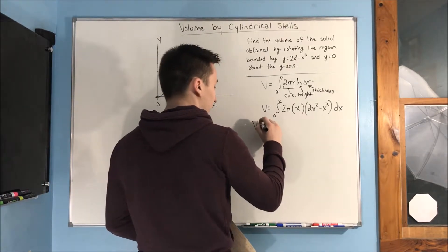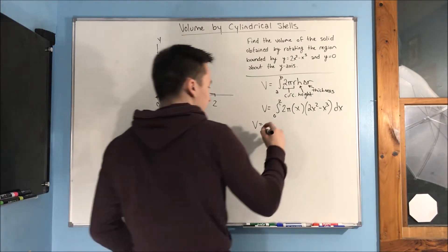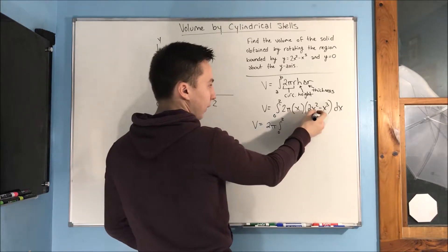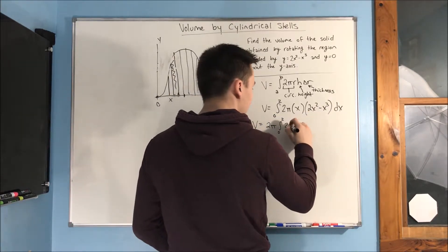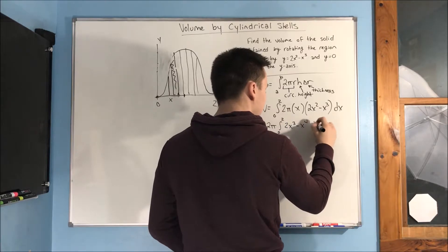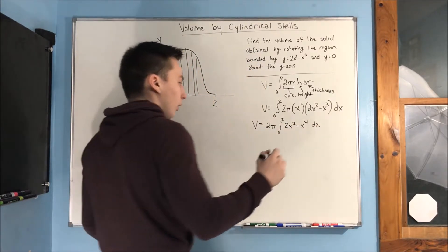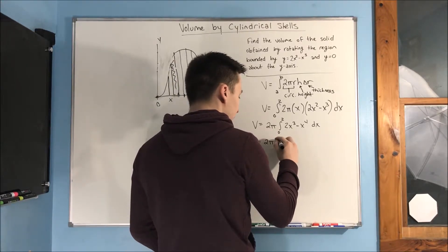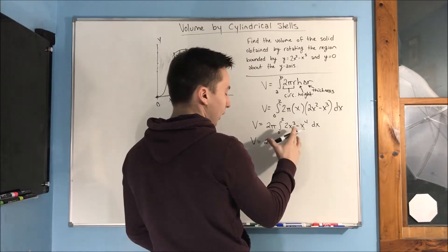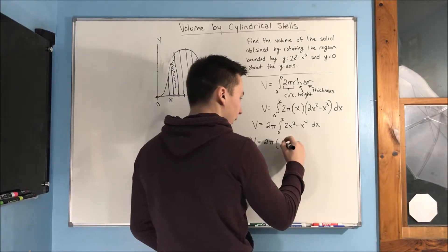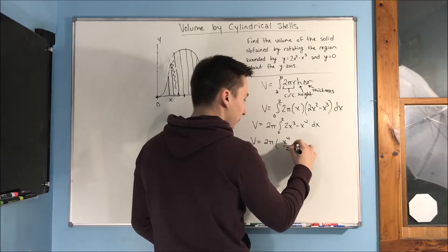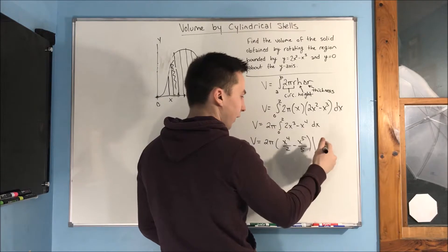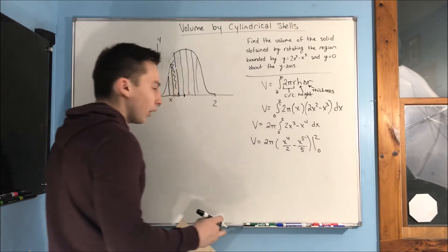So, let's start off with our integral. This is just calc one now. We have two pi, the integral from zero to two. We distribute the x here. We get 2x cubed minus x to the fourth dx. And, we can integrate that now. We get our volume is equal to 2 pi times, we can do our reverse power rule here. We're going to get x to the fourth over 2 minus x to the fifth over 5. And, we're going to evaluate that from zero to two.